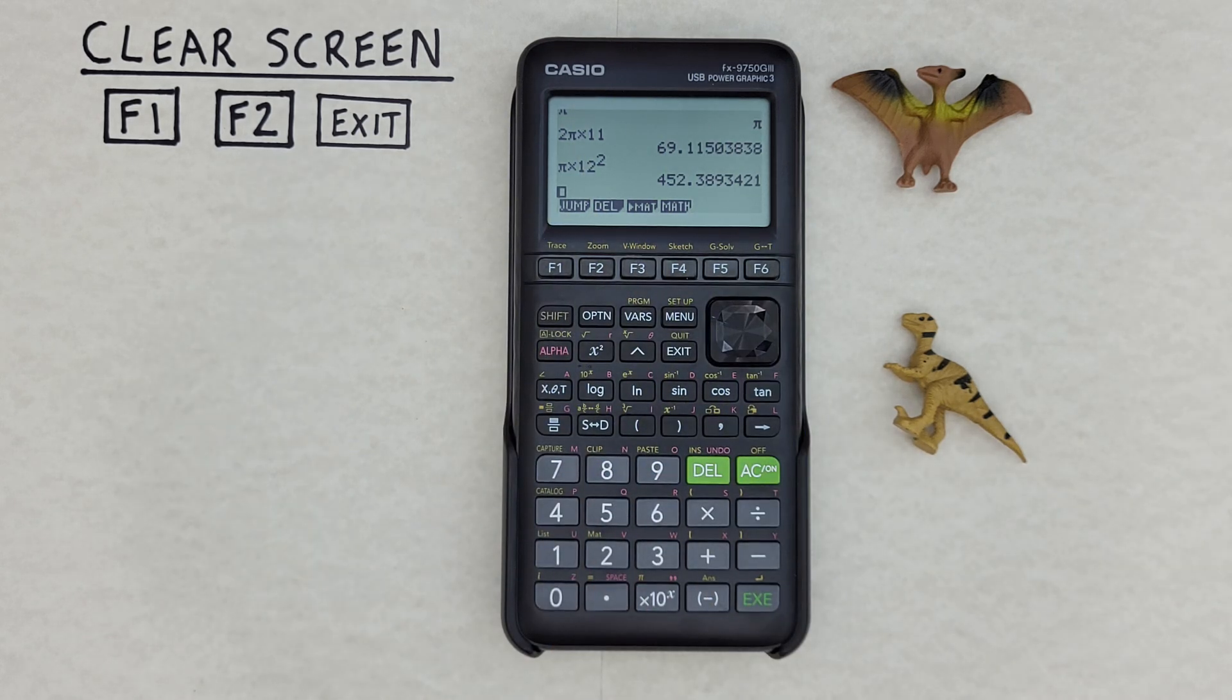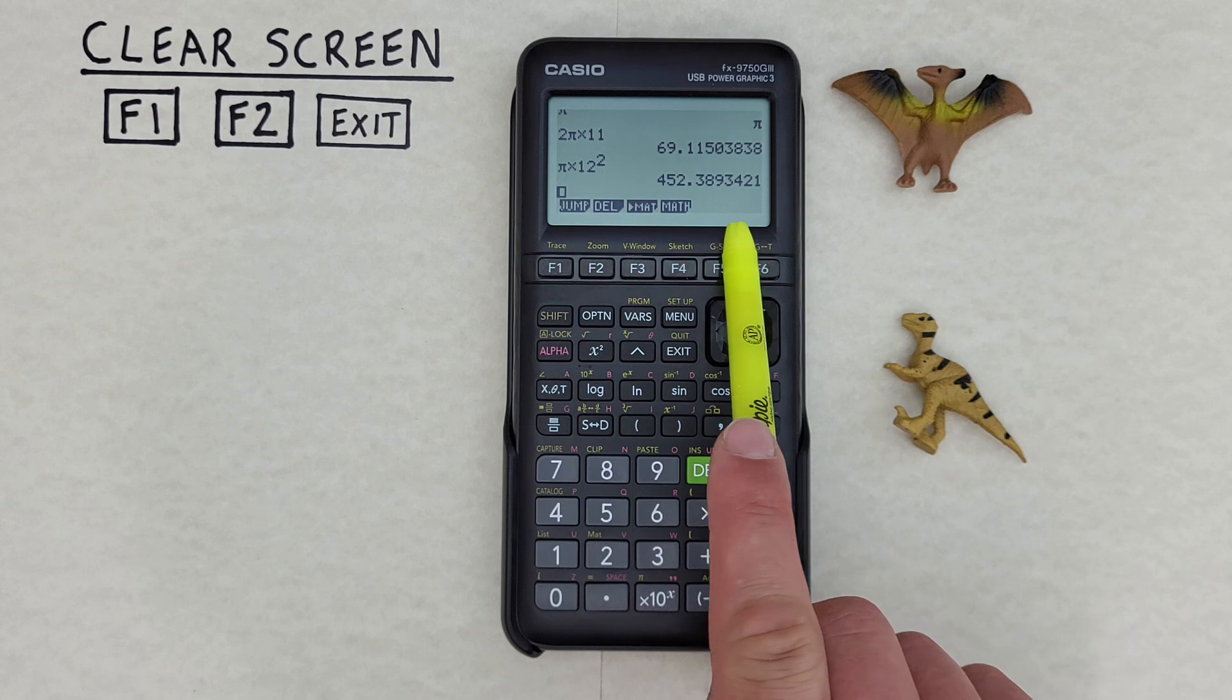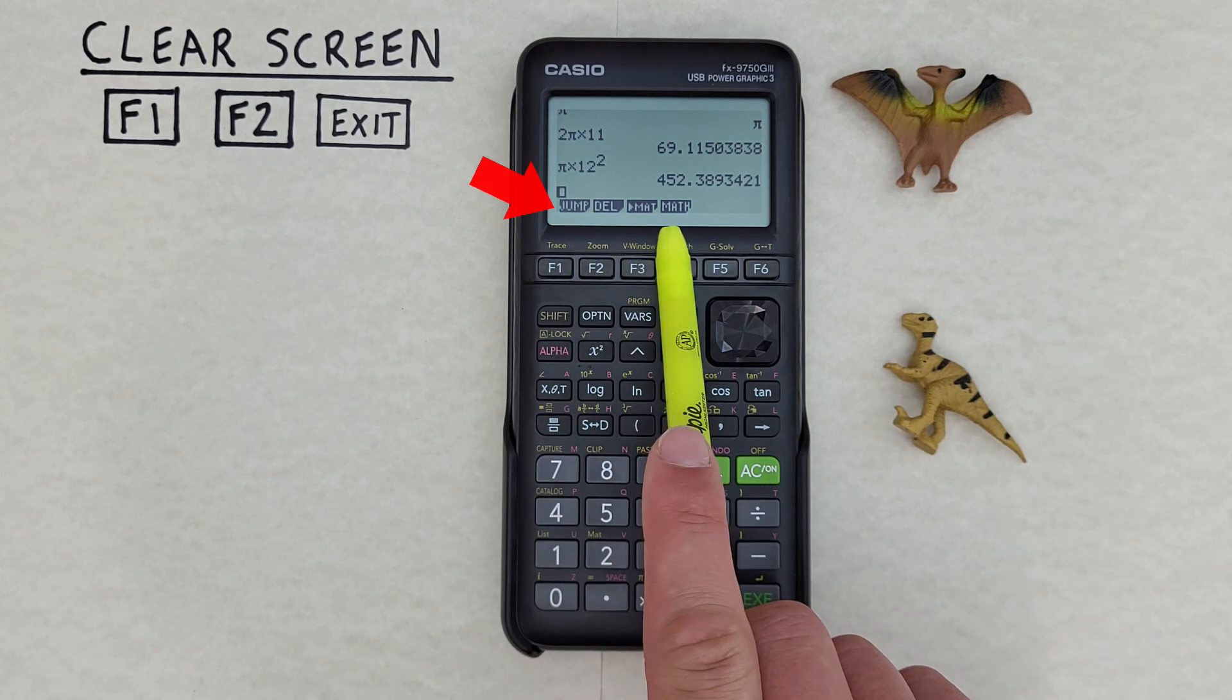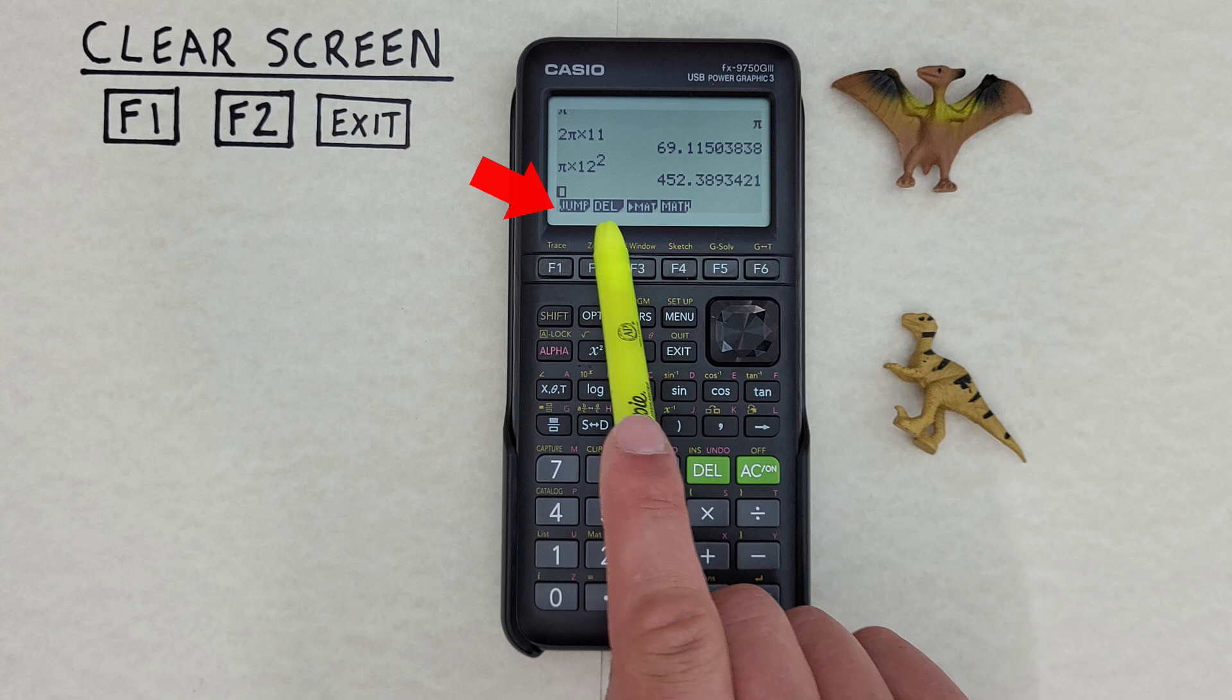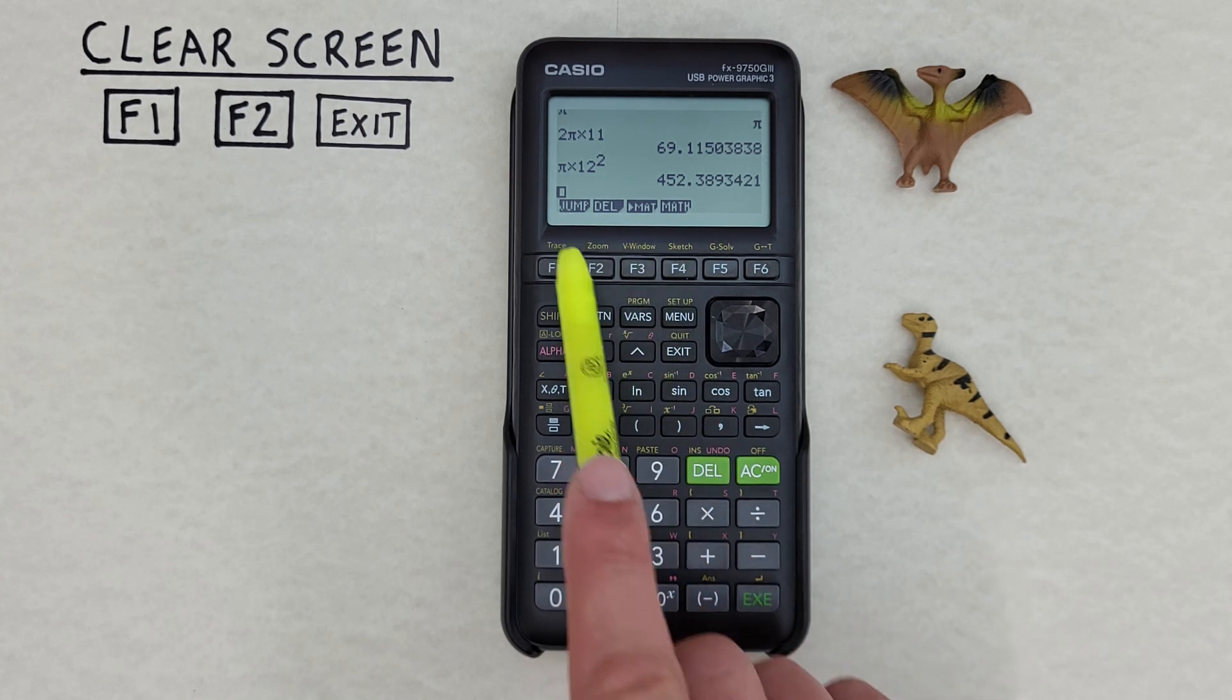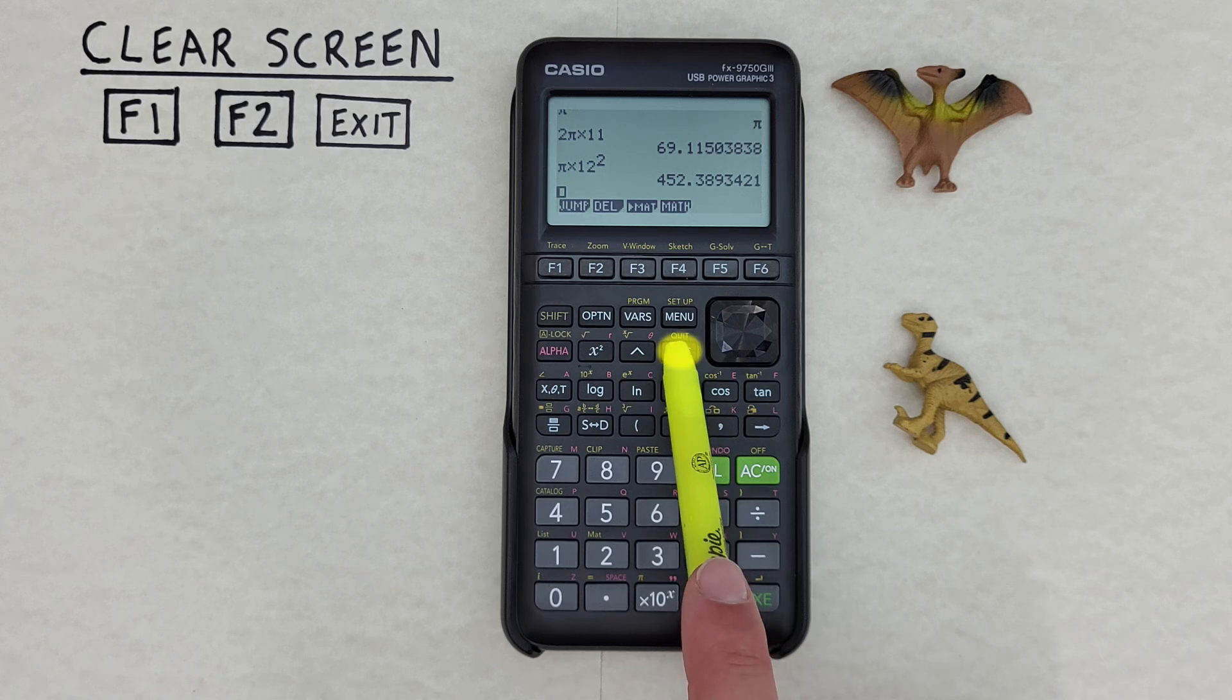To do that, we need to be in the main screen of the Run menu. It should look like this. If it doesn't look like this, with Jump, DEL, Mat, and Math options here, you can get to that by pressing the exit key until you get there.